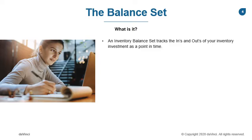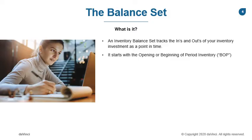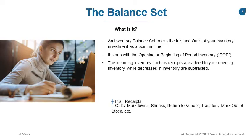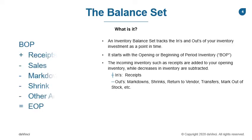A Balance Set is created at month or some other time period measure. To create a Balance Set, start with the beginning of period inventory — BOP for short. You then add incoming inventory and reduce or subtract outgoing inventory, which results in the ending inventory for that period. Incoming inventory you would add would be receipts. Reductions in inventory would be your sales, markdowns — both permanent and point of sale — shrink, and other inventory adjustments.